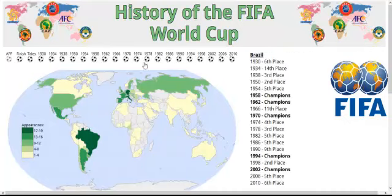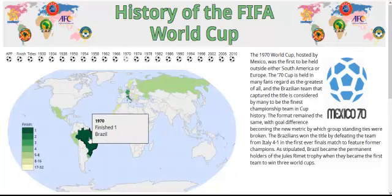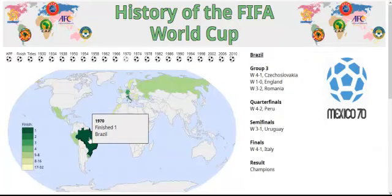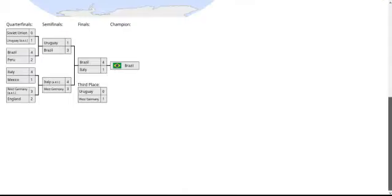After choosing, say, 1970, the user will see text in the information window giving a brief description of the 1970 World Cup. They would then move the cursor over Brazil, see a pop-up showing how Brazil did, and click on the highlighted country to retrieve individual game results. A bracket for the 1970 World Cup will appear underneath the map.